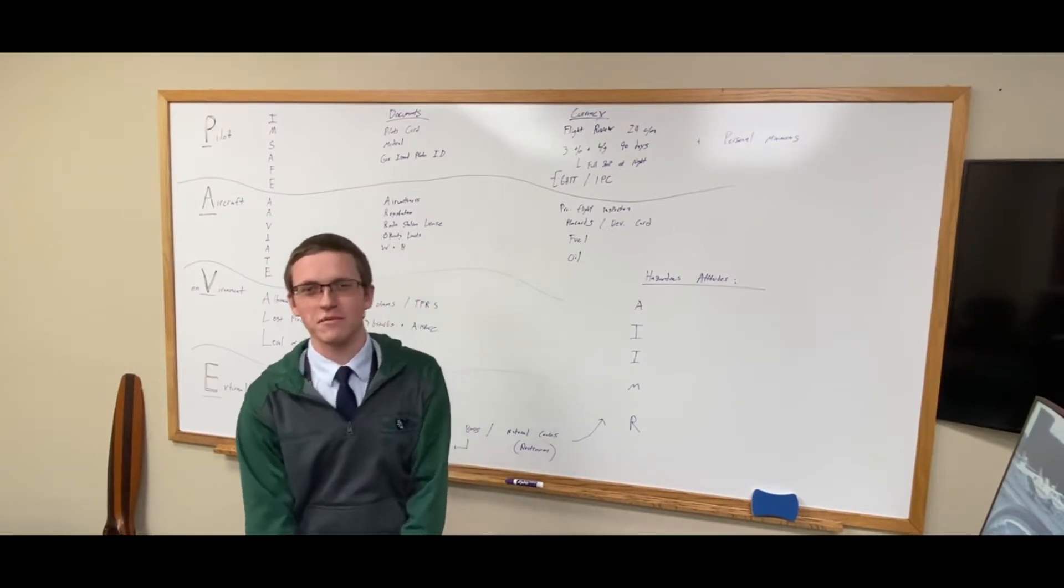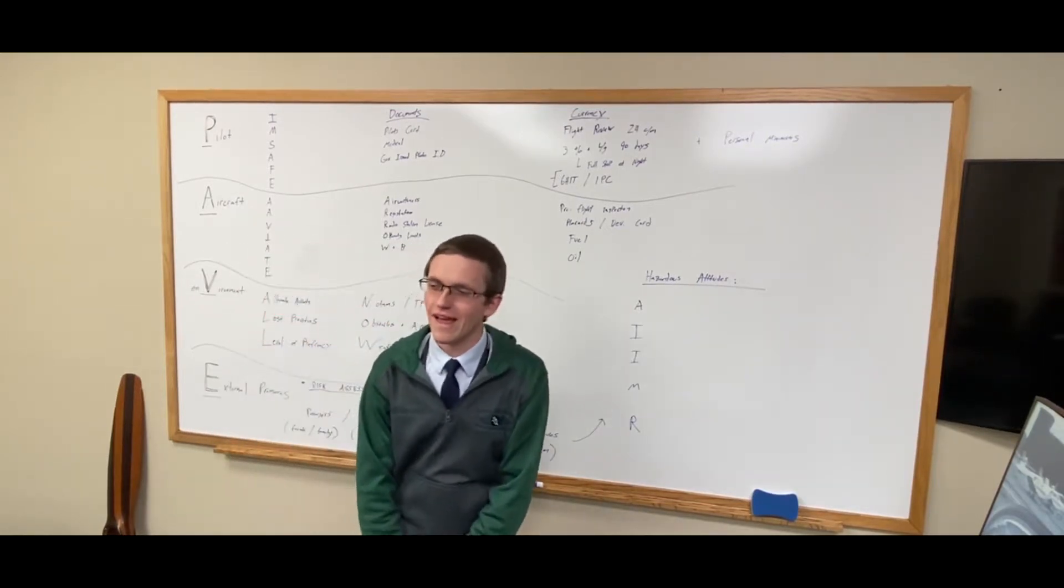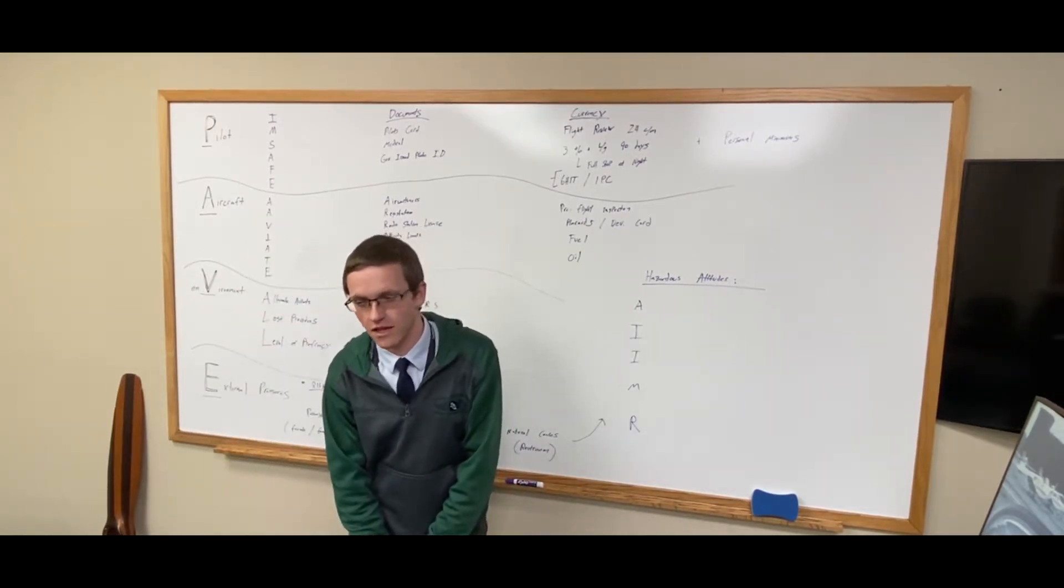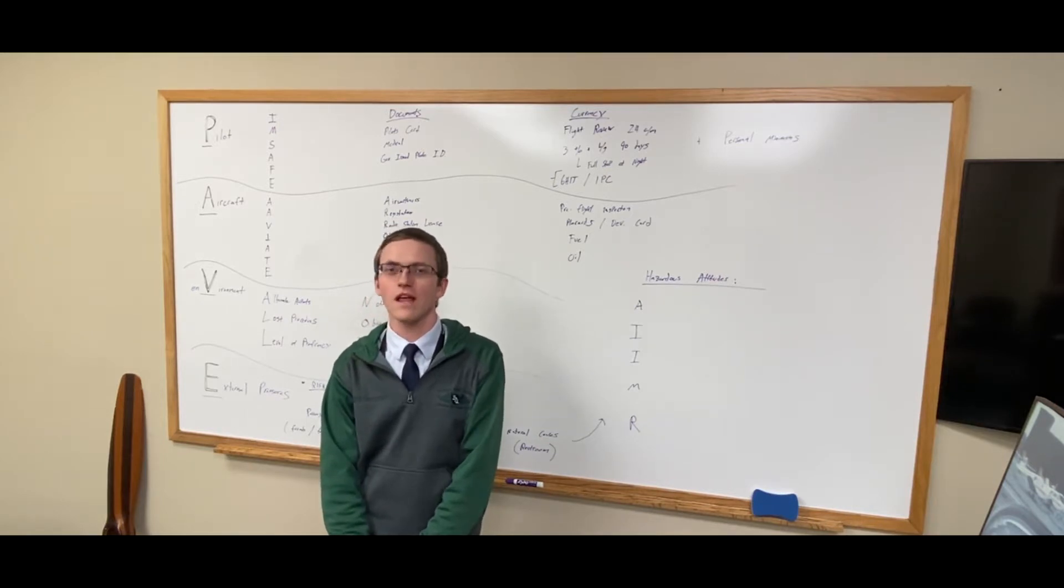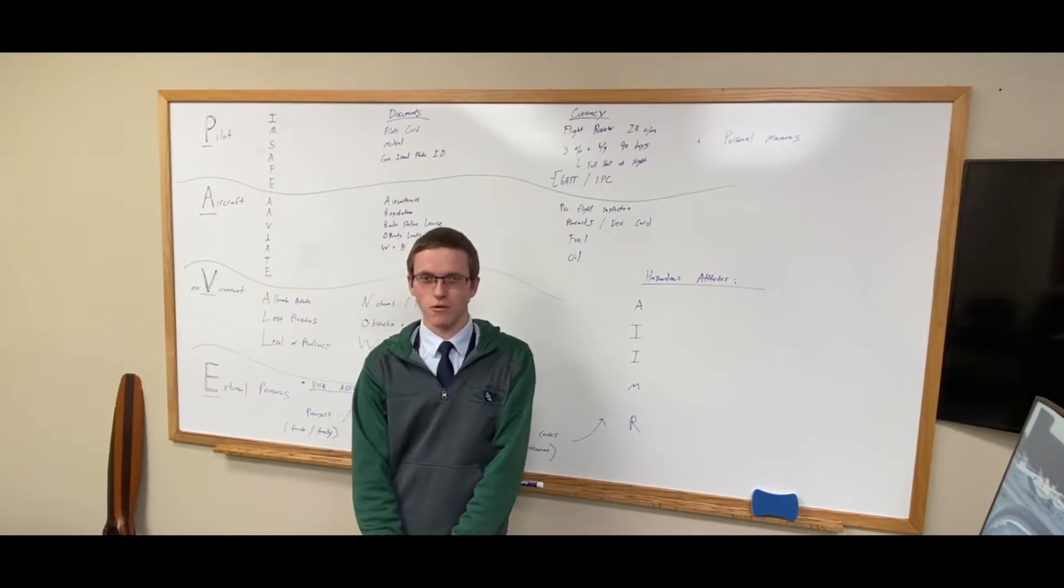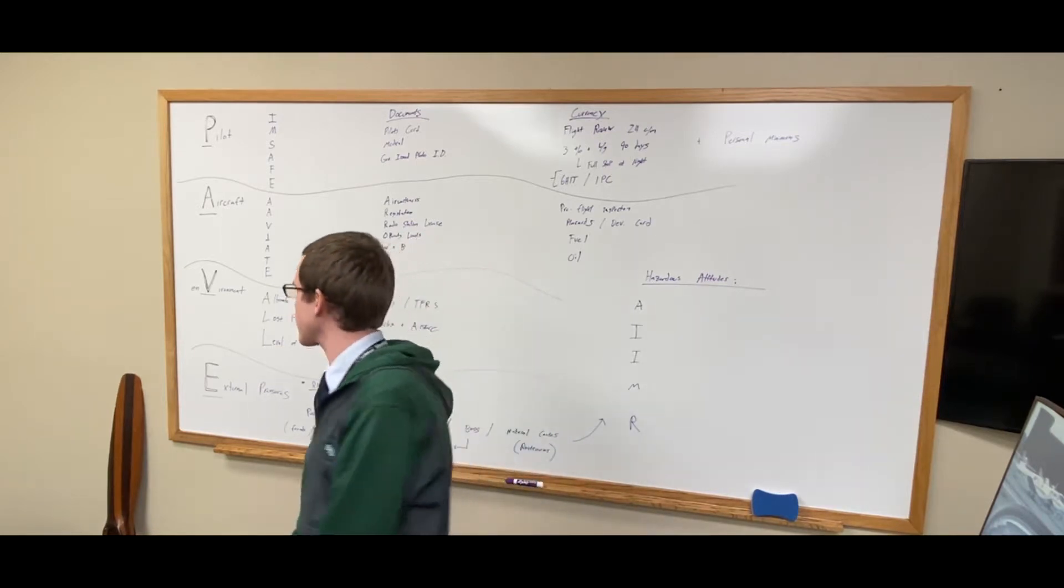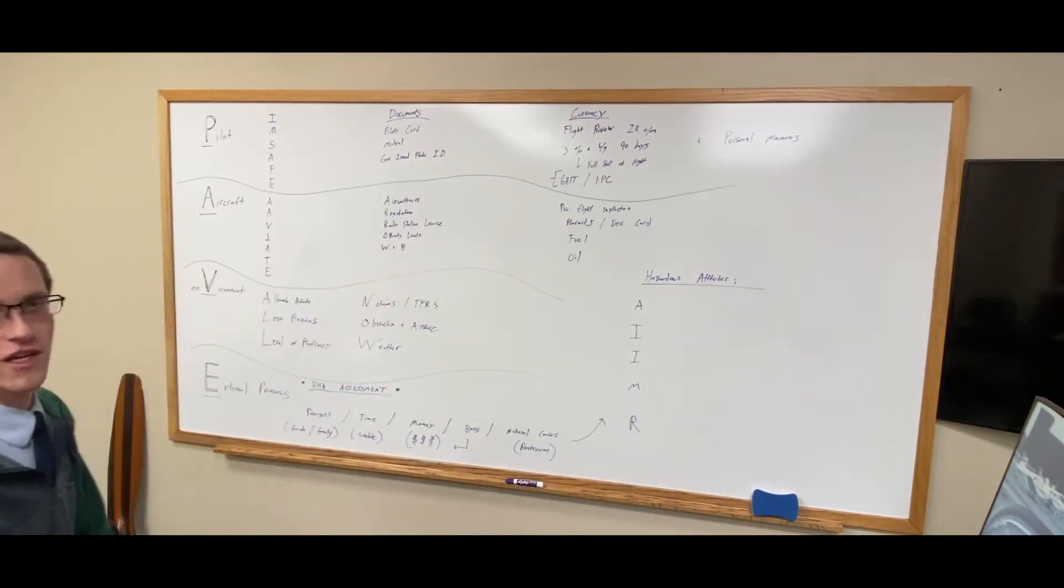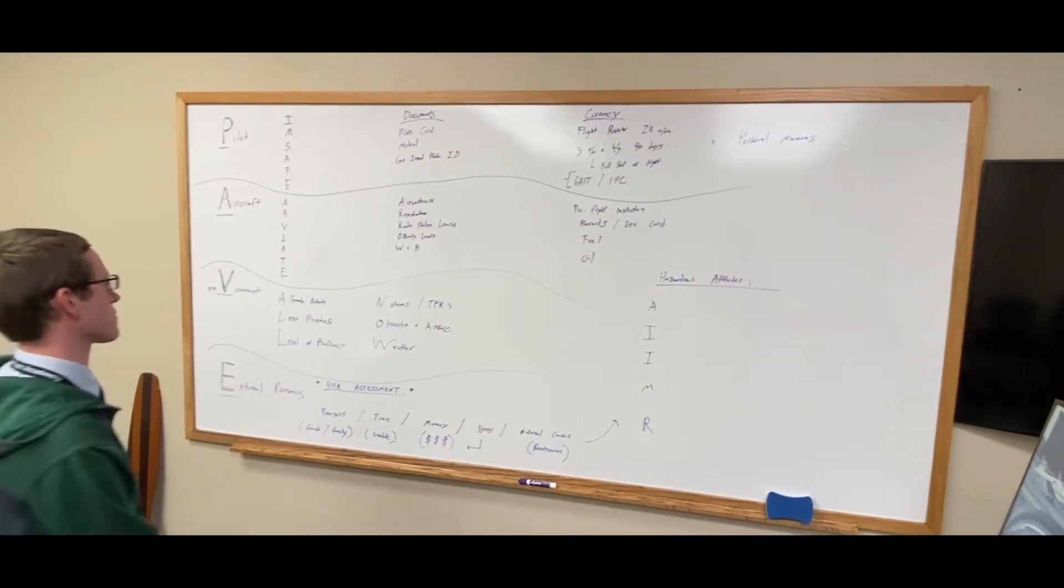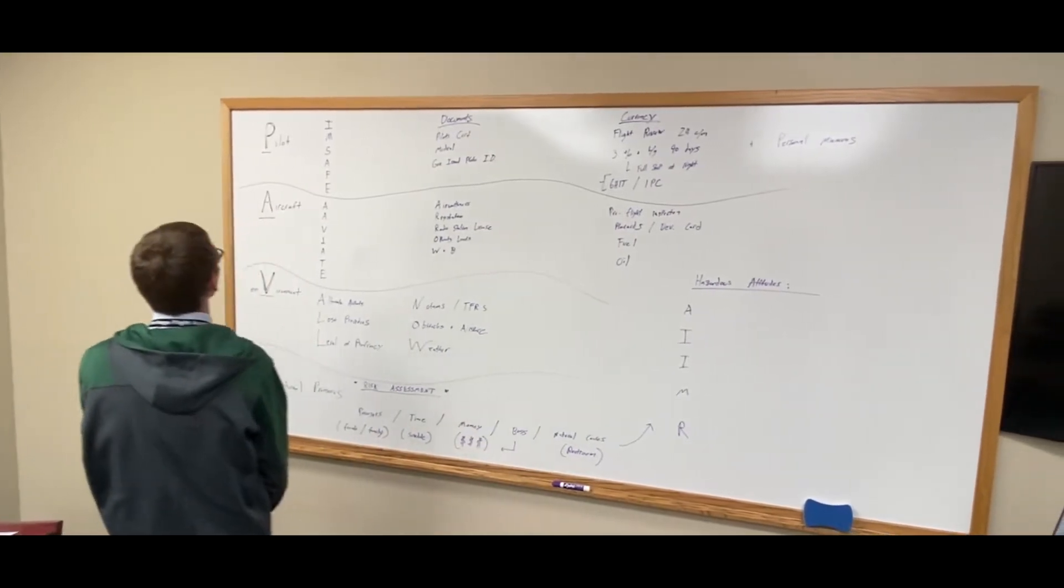Hello everyone, on this segment we're going to be talking about aeronautical decision-making, and more importantly as part of it, making the go or no-go decision. So essentially what I'm going to do is break down the PAVE checklist. The PAVE checklist is a very popular checklist used to help you make that go or no-go decision based on a number of factors.